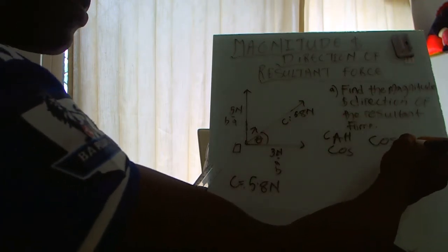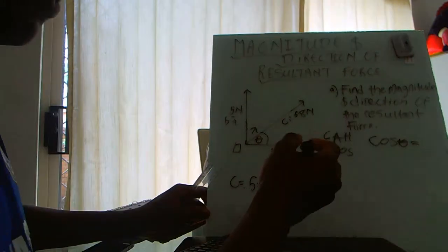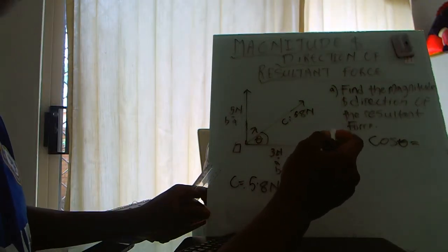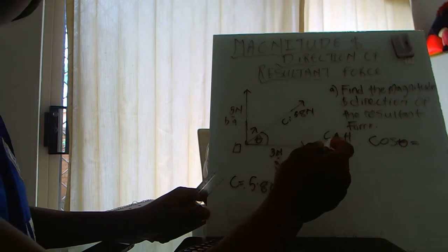CAH means cos, so what we can do is cos theta, because that's an angle we need to find. Theta equals what this simply means: CAH, cos means adjacent